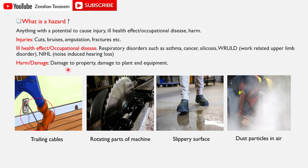Damage की बात करें तो damage to property, damage to plant and equipment — मतलब यह हुआ कि कोई भी ऐसी चीज जिससे injury हो सके, ill health effect हो सके, या property damage हो सके, उसको हम लोग hazard कहते हैं। जैसे trailing cables — कोई भी trip होके गिर सकता है, तो उसको cuts, fracture, या sprain आ सकती है। Machine के rotating parts से cut injury हो सकती है।